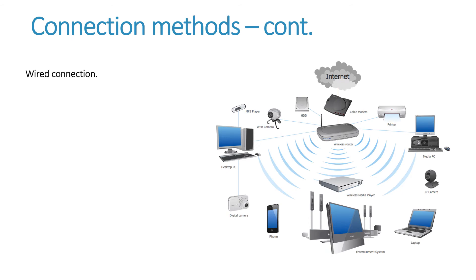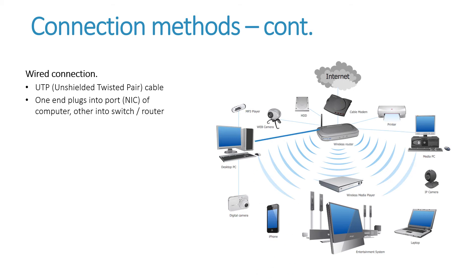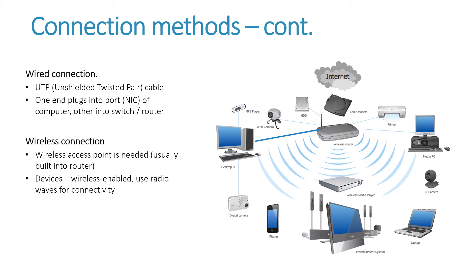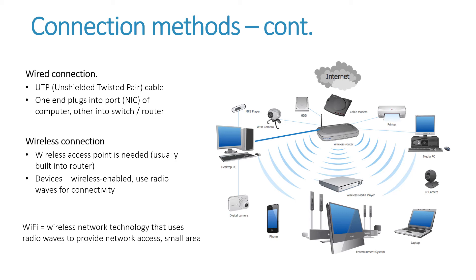Let's look at connection methods some more. We have a wired connection, and it's usually UTP, which is unshielded twisted pair — it's a cable. It might run between the desktop PC and the wireless router. One end would plug into the NIC in the computer, and the other end would plug into the switch or router. For a wireless connection, you need a wireless access point, and usually that is also built into the router. The devices need to be wireless enabled, and they use radio waves for connectivity. Wi-Fi means wireless network technology that uses radio waves to provide network access in a small area.